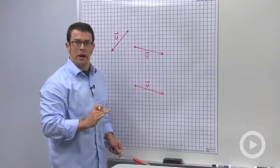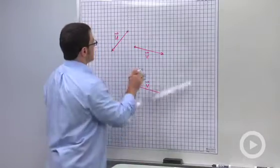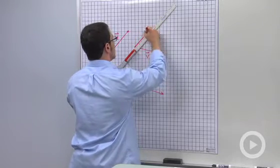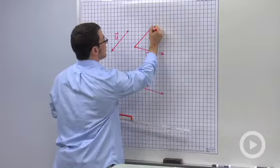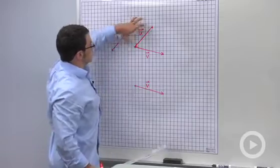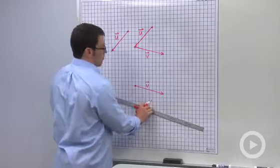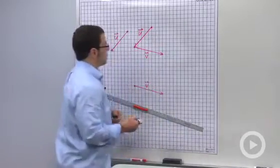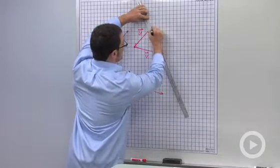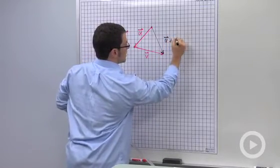I can take this vector and slide it over so that its head is right at the tail of vector v. You can always slide vectors around because two vectors are equal as long as they have the same length and direction. So let me draw a vector with the same length and direction as u. And that would be this. As long as it has the same length and the same direction, it's the same vector. And so the sum of these two vectors would be the vector that you draw from the tail of the first to the head of the second. That's vector u plus v.